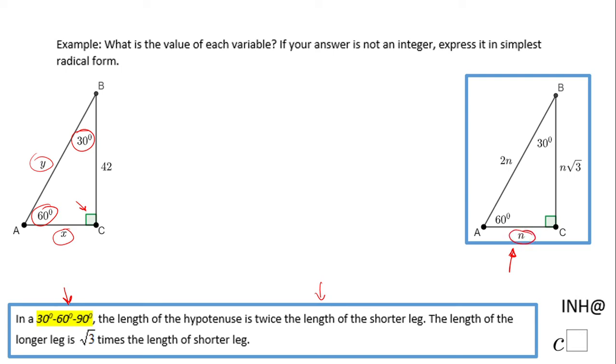How do I find the n? I'm looking to this 42, which I can match it with this n√3. So basically, I'm going to write an equation here: 42 = n√3.